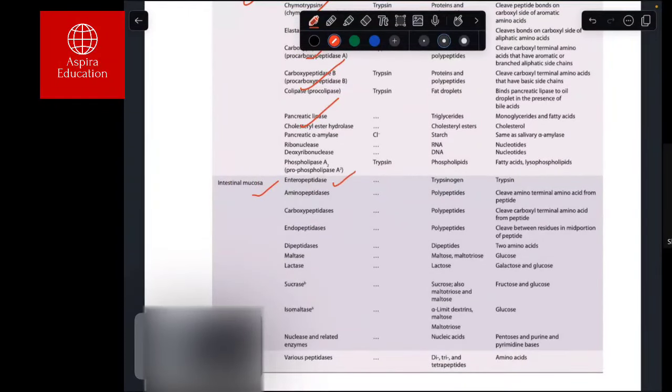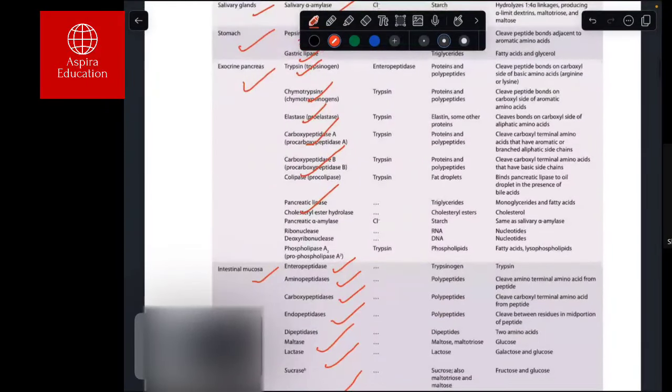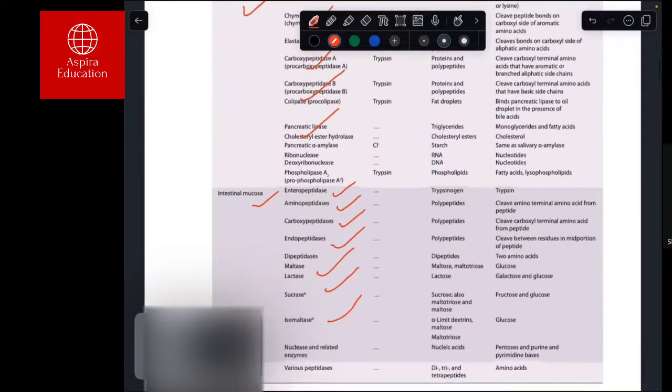The intestinal mucosa produces endopeptidase, aminopeptidase, carbopeptidase, maltase, lactase, sucrase, and many other enzymes. The table has all the substrates, final products, and mechanisms of action. Since time is limited, I'm just skimming through. You can go through the table—you have to be very thorough with this data because these things are very commonly asked in your MRCP Part 1 exam.